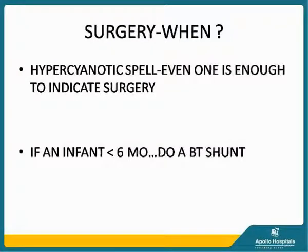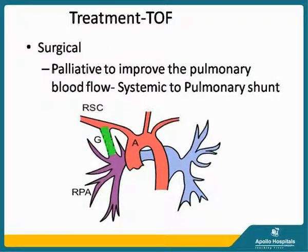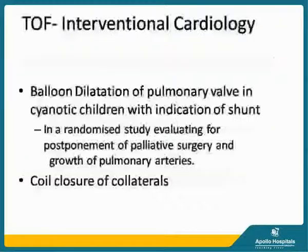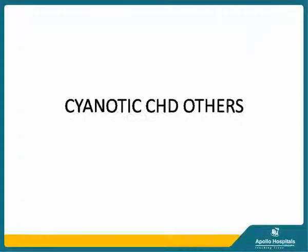Surgery is indicated if there is any hypercyanotic spell — even one is sufficient. If an infant is less than 6 months, a BT shunt can be done as surgical palliation to improve pulmonary blood flow. If saturations approach 75 percent, plan for surgery. Surgery is decided on the basis of age, patient weight, pulmonary artery size, and favorable anatomy. If weight is more than 7.5 kg a repair can be done; if more than 8 kg with favorable anatomy, complete repair; otherwise a BT shunt. Balloon dilatation of the pulmonary valve in cyanotic children has also been done as an intervention for postponement of palliative surgery and growth of pulmonary arteries.